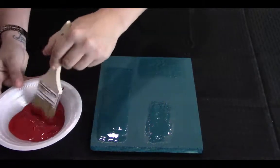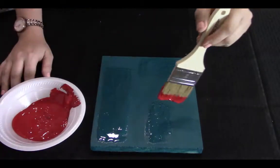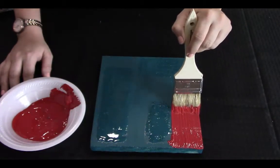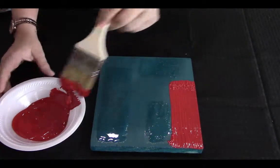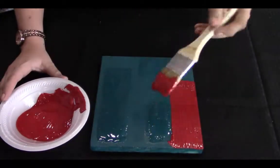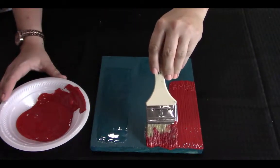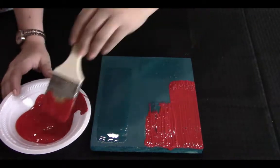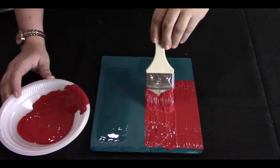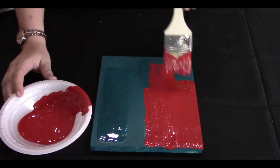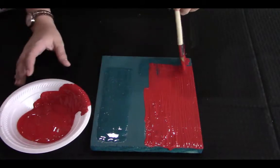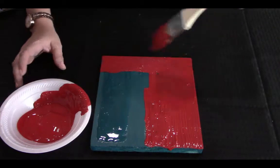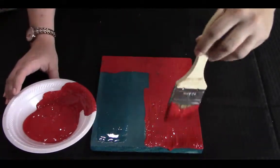So the thing that you just have to be careful of is when you paint, you don't want to drag, like push hard down onto the surface and then drag your paint, because then you're going to drag that crackle medium. You want to just lightly paint over it. You just want to basically layer that paint on top of the medium. You don't want to drag that medium around. You want to try and keep it in its spot.